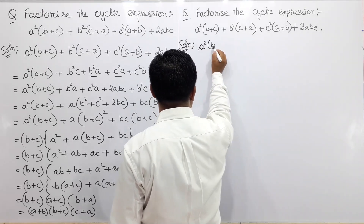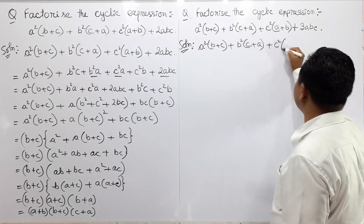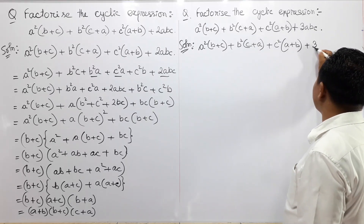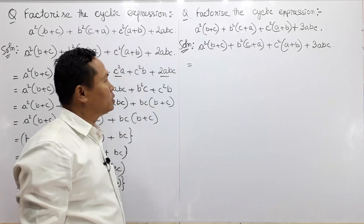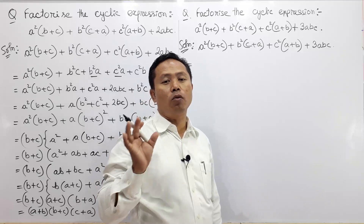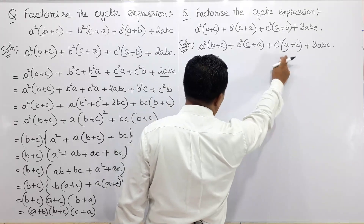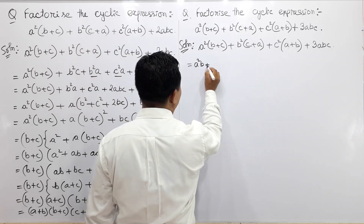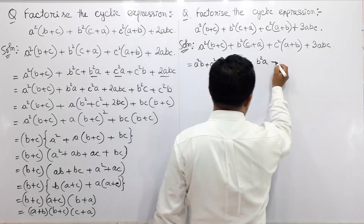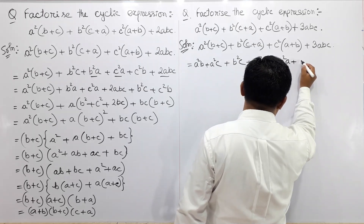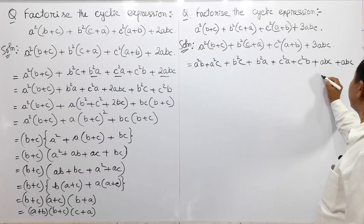Repeating the question: A squared B plus C, plus B squared C plus A, plus C squared A plus B plus C. Expanded: A squared B plus A squared C plus B squared C plus B squared A, plus C squared A plus C squared B. Plus ABC plus ABC plus ABC plus ABC — that is four times ABC, which equals twice ABC in the original.